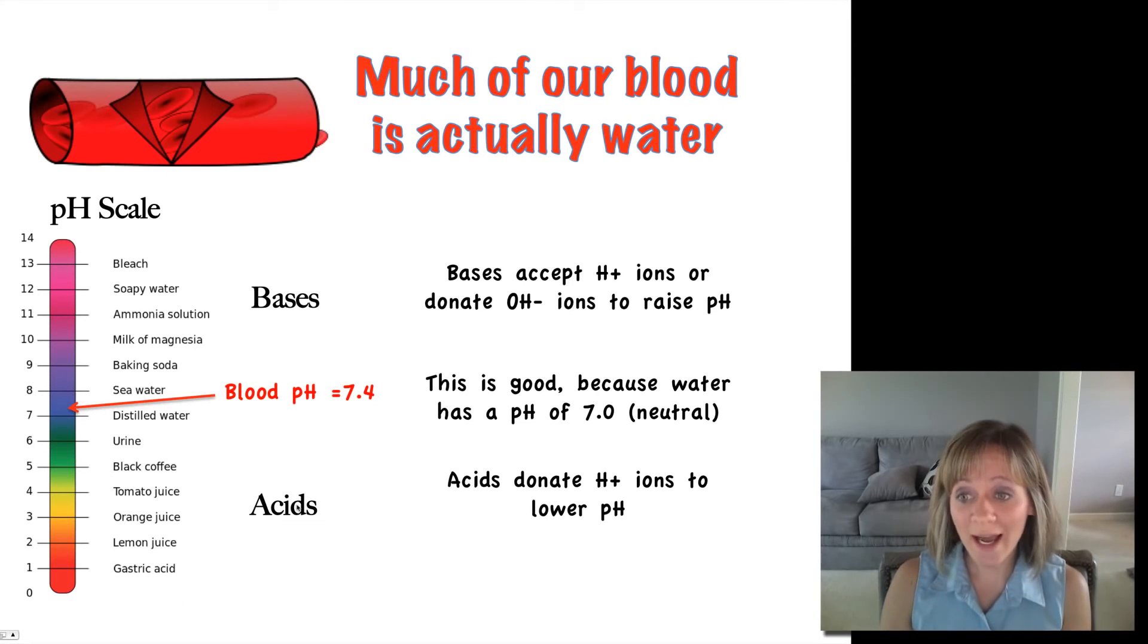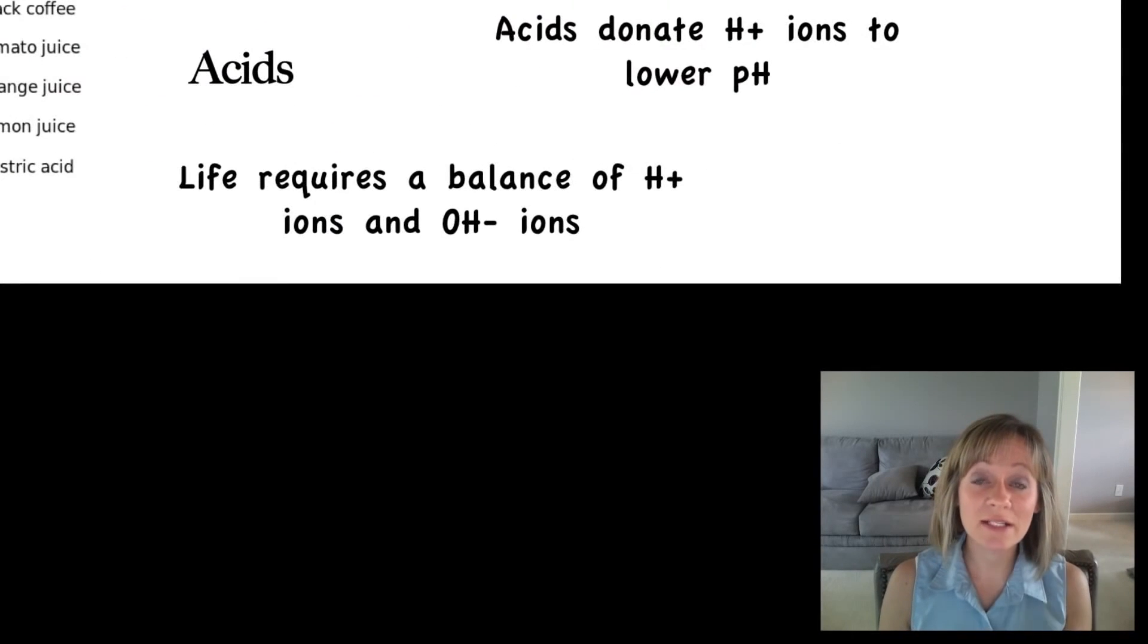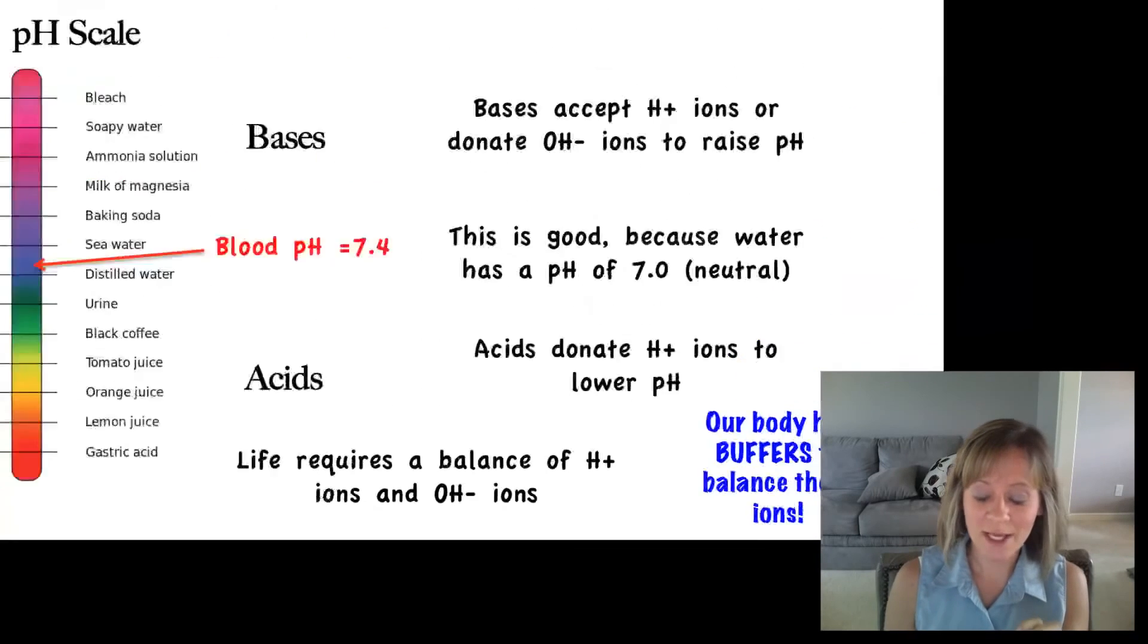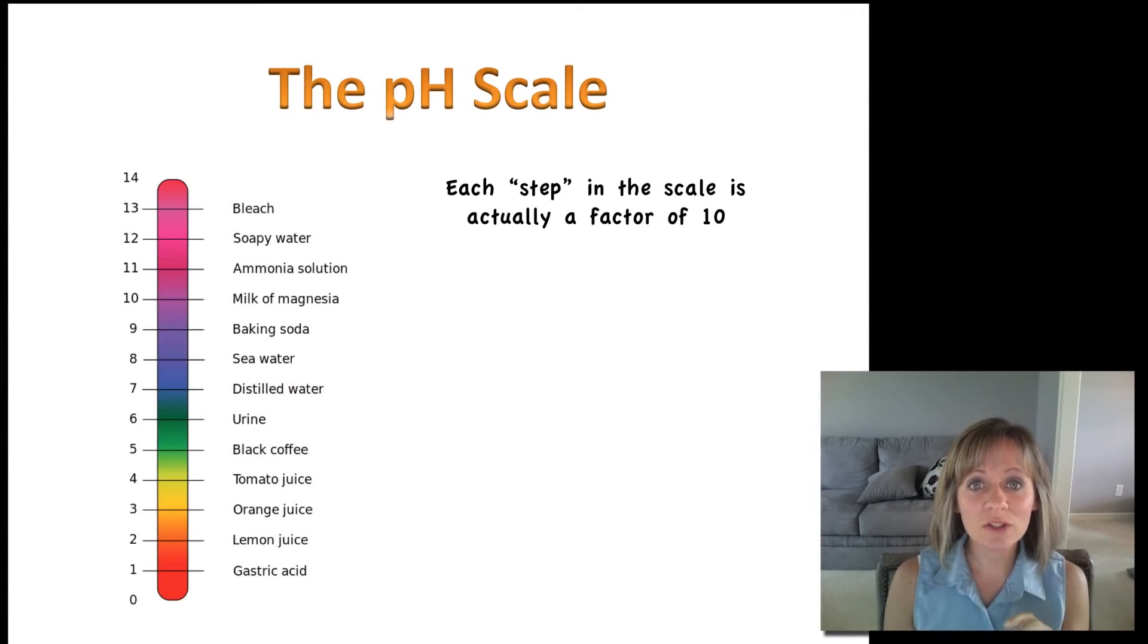On the other end of the pH scale we have acids, between zero and up to seven. Acids donate hydrogen ions and they're going to lower pH towards the one-two end of the pH scale. Now why are we talking about the pH scale? Life requires a very delicate balance of hydrogen ions and hydroxide ions, and our body has something really cool called buffers that are going to balance these ions out. You're going to learn more about buffers with your homework assignment.